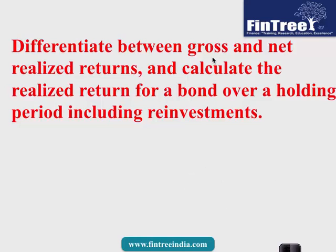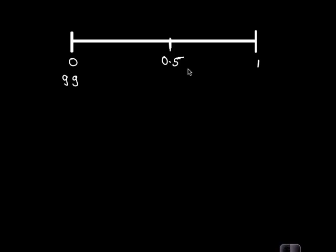Let us start with gross versus net realized returns. Give heading in the notes: Gross Returns versus Net Returns. Let's say this is time zero and this is time one. What you did is you invested into a bond an amount of 99, and you decided to exit from that position at time 0.5. At this period, the price of the bond was 101.5 plus you received a coupon payment of 2, assuming semi-annual coupon rate.